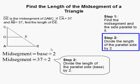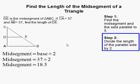So remember we're given that it's 37. We simply divide that by 2 and we get 18.5. And that completes our problem.